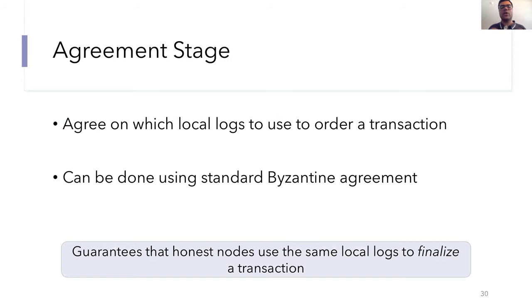The second stage of our Aequitas protocol is the agreement stage. After the gossip stage for some particular transaction TX has ended, all of the honest nodes will have a set of local logs that contain TX. But these nodes may have received different local logs from different nodes by the time the gossip stage ends. And in the agreement stage, the goal is to agree on exactly which local logs to use to order TX. The main guarantee that we want is that all of the honest nodes should use the same local logs to finalize the ordering. Since the logs are already consistent from the gossip stage, this means that all of the nodes will use the same data to compute the final ordering. This agreement stage can be easily extrapolated from standard Byzantine agreement.